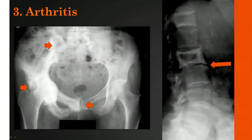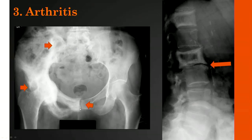Arthritis is a common associated complication. Here you have the whole right hemipelvis involved with arthritic changes at the sacroiliac joint, the symphysis pubis, and osteophytes with protrusio of the right hip joint. In the spine, you get degenerative disc disease associated with this picture frame vertebra of Paget's, with narrowing of the disc space and osteophyte formation.